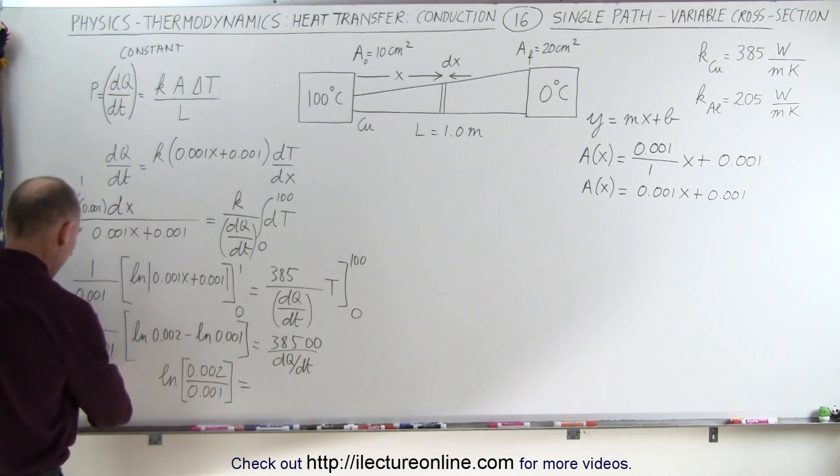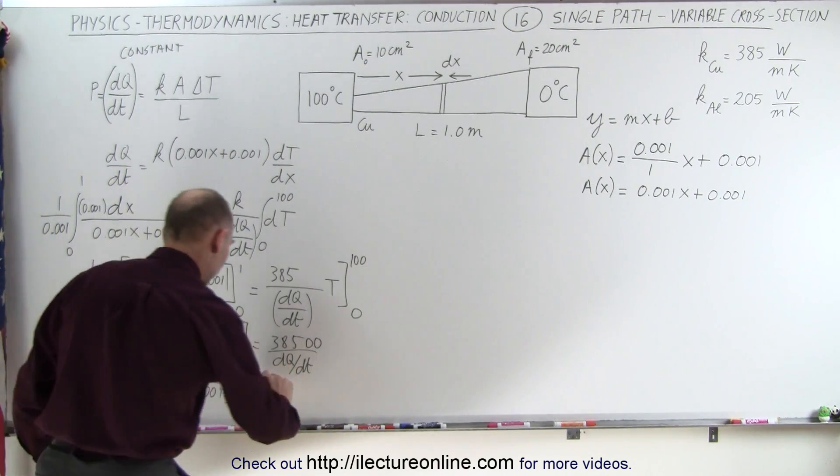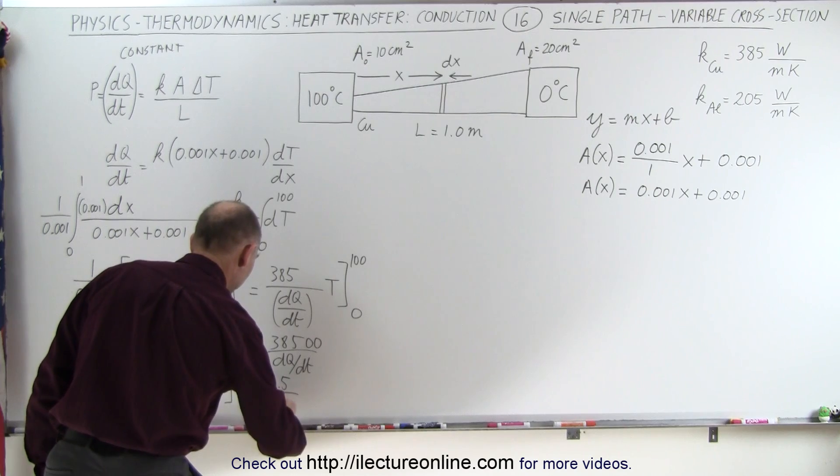...and that's going to be equal to, when we multiply this times that, we end up with 38.5 divided by dQ/dt.